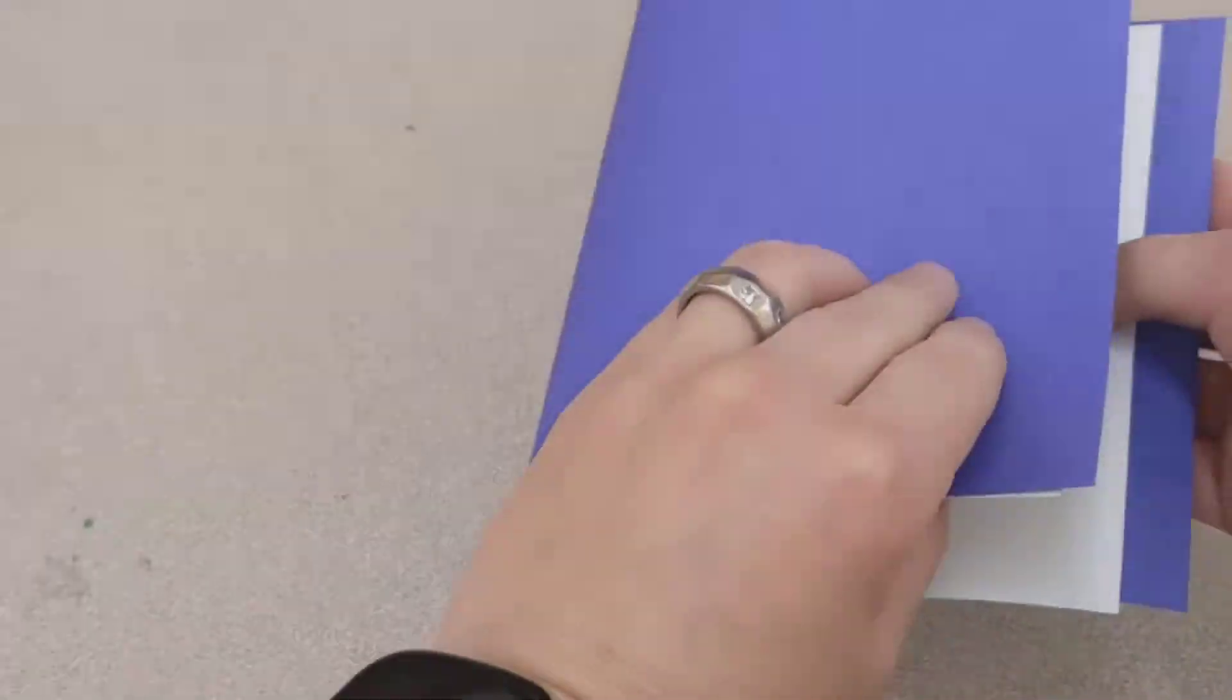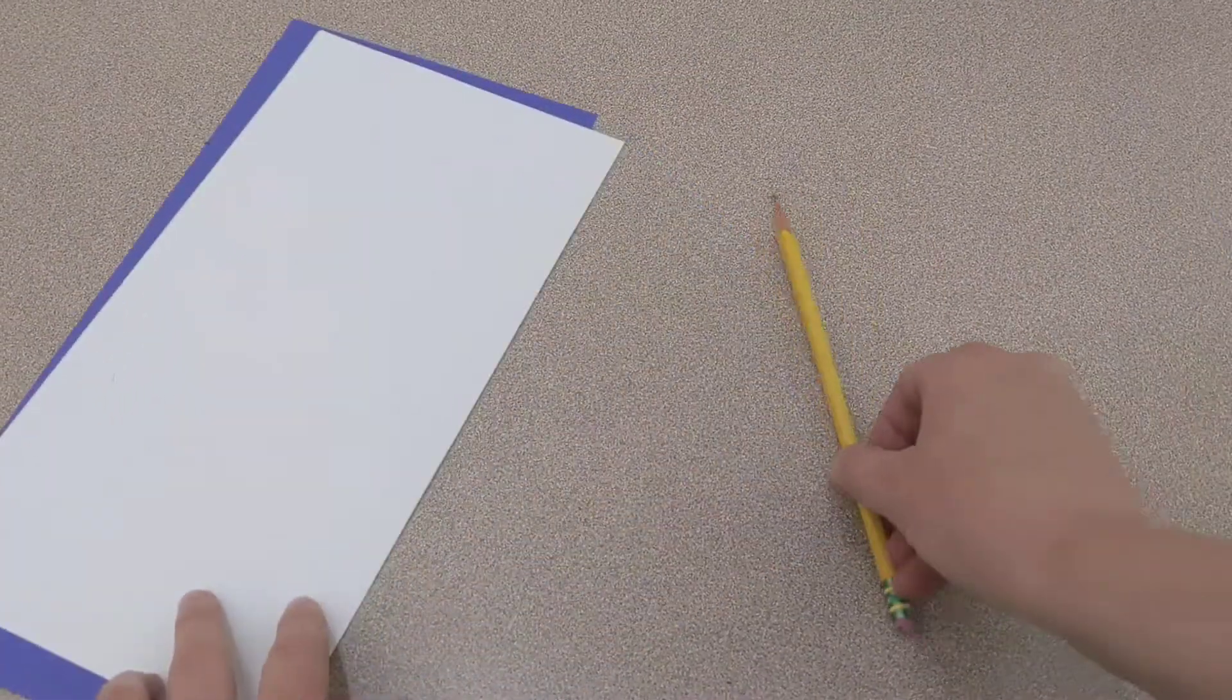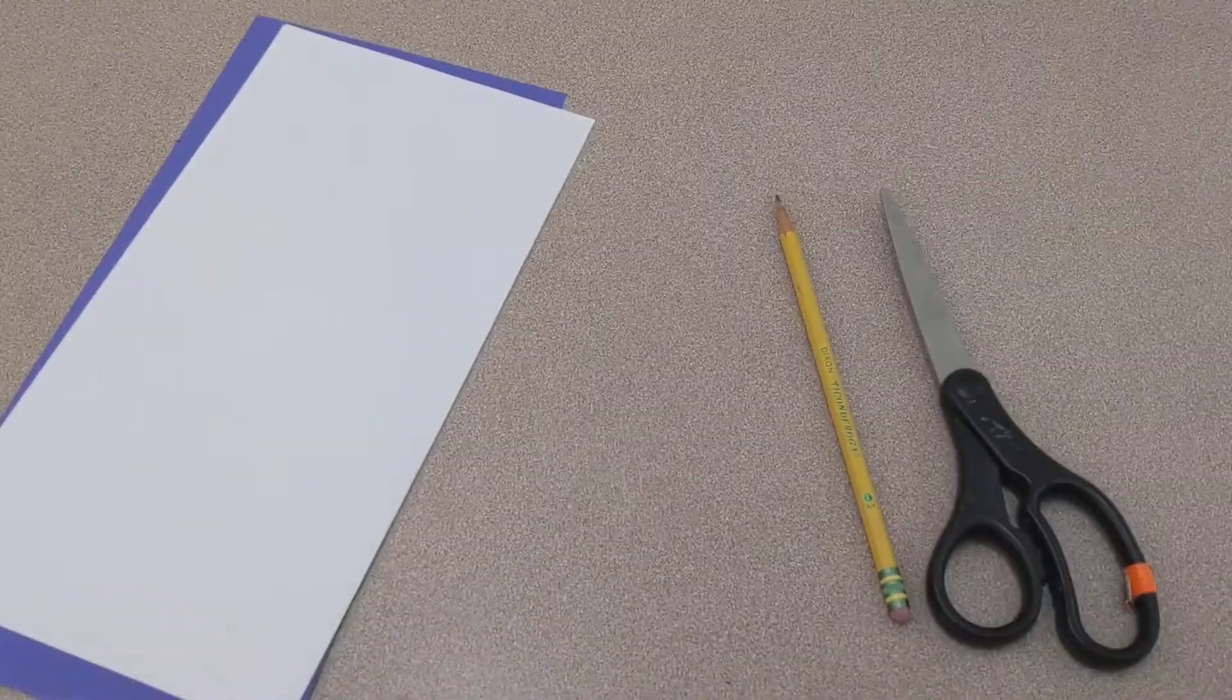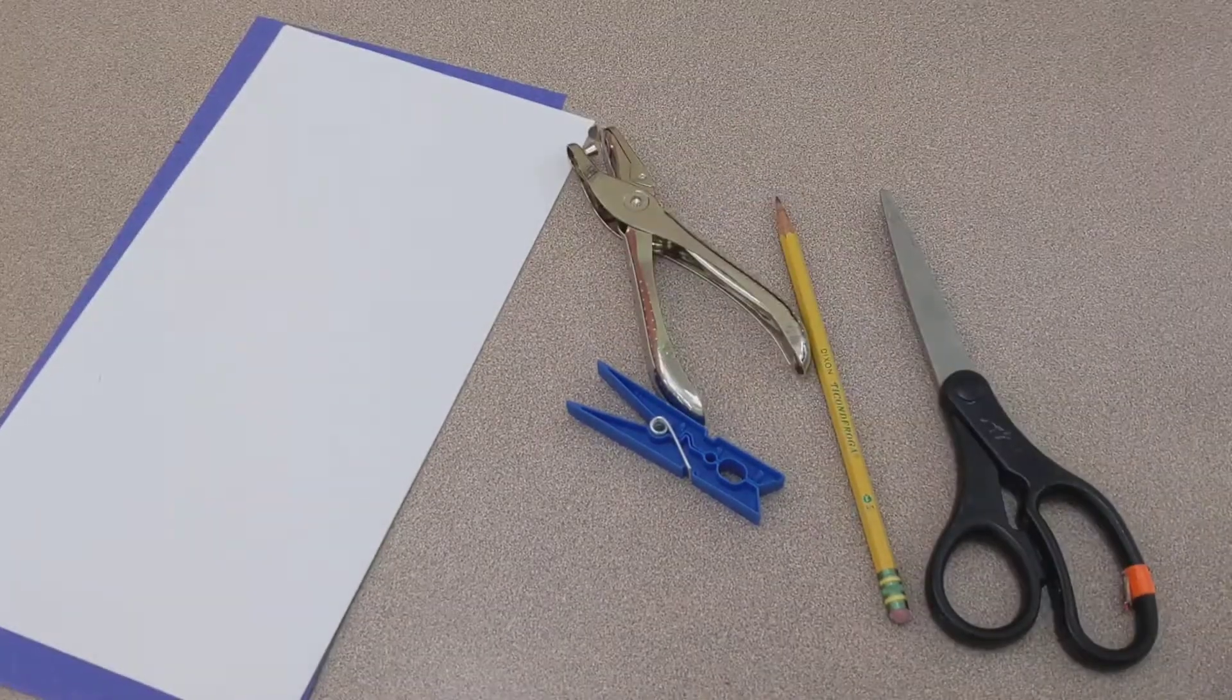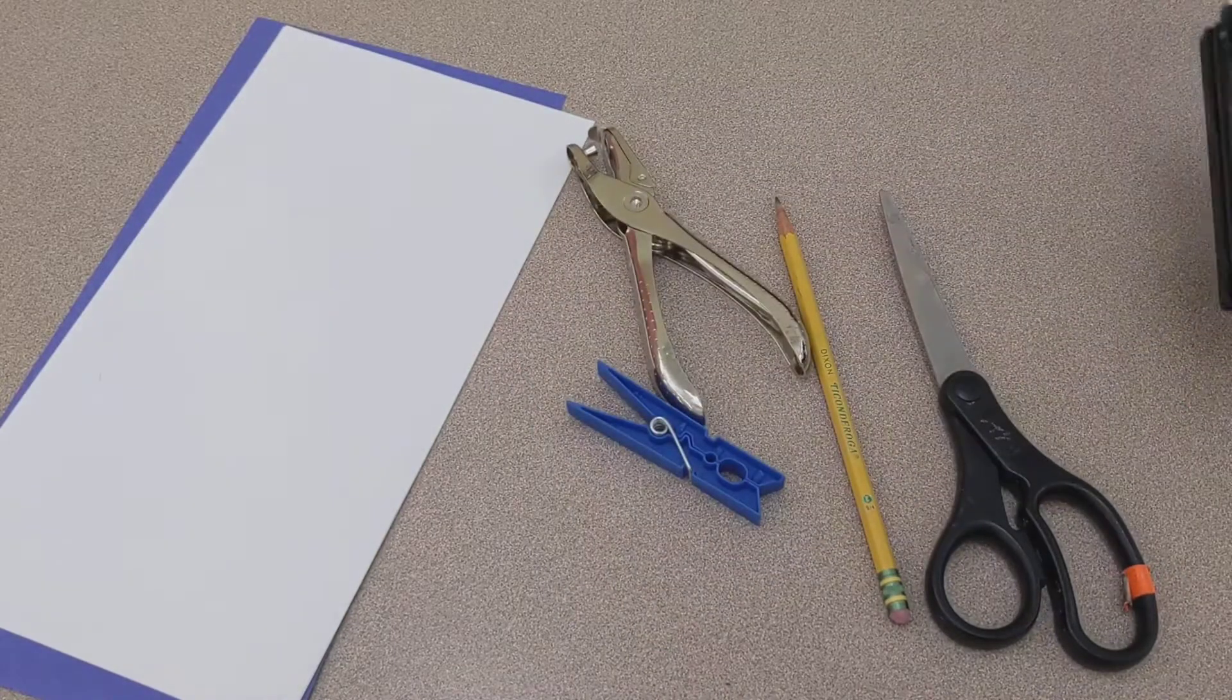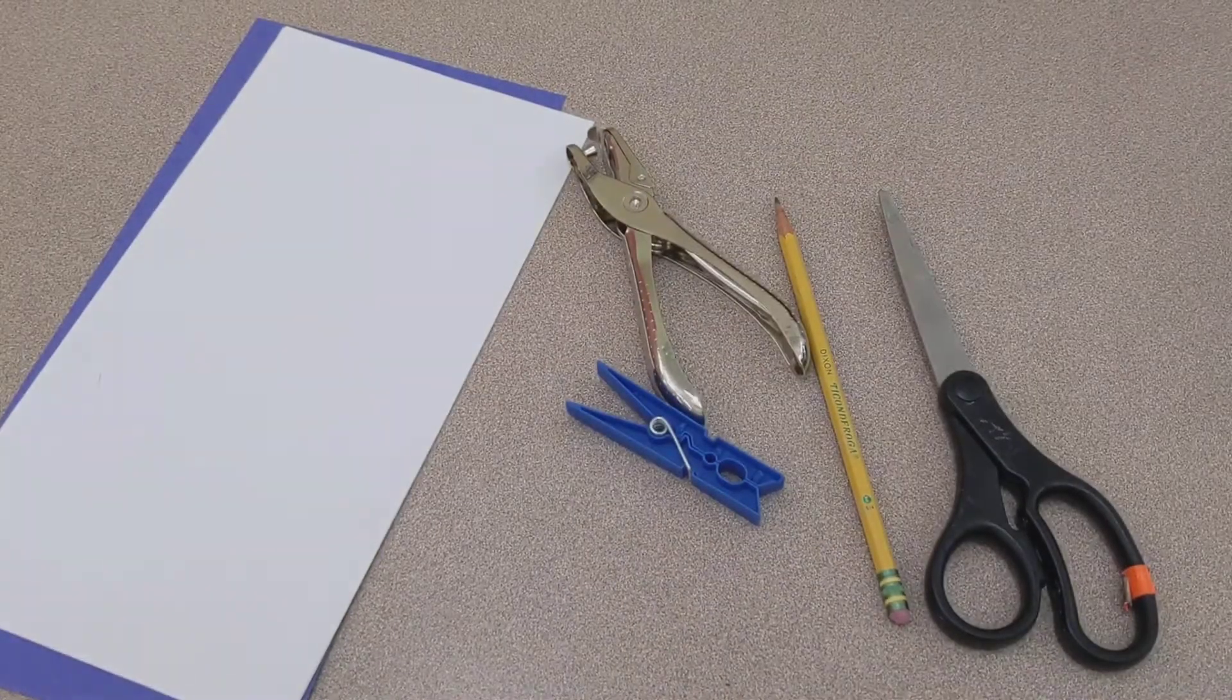Today I'm going to show you how to make a book with a cover and pages on the inside. You will need a pencil, scissors, a clip, hole punch or the big hole punch, and papers.